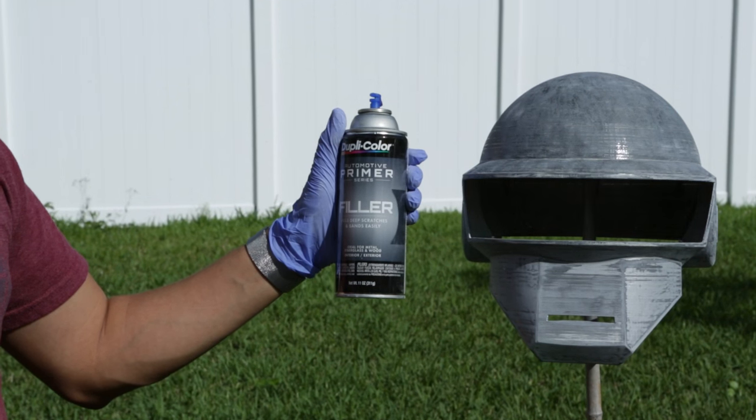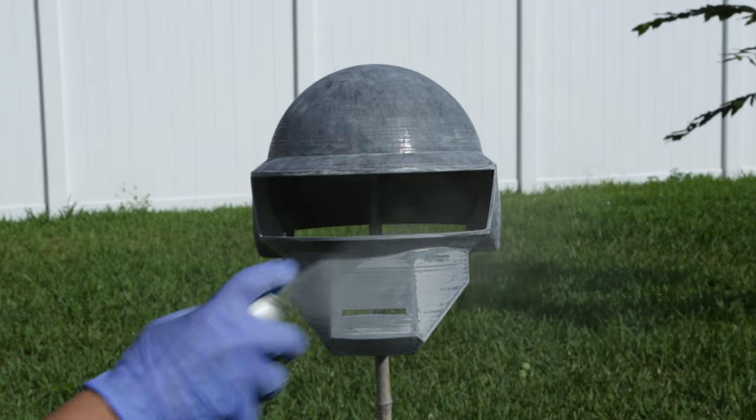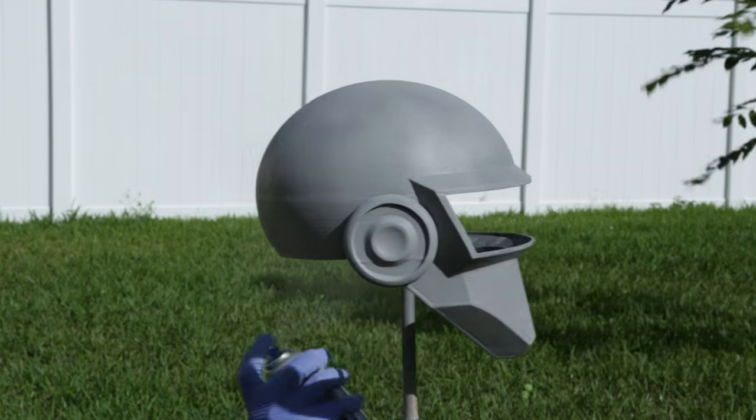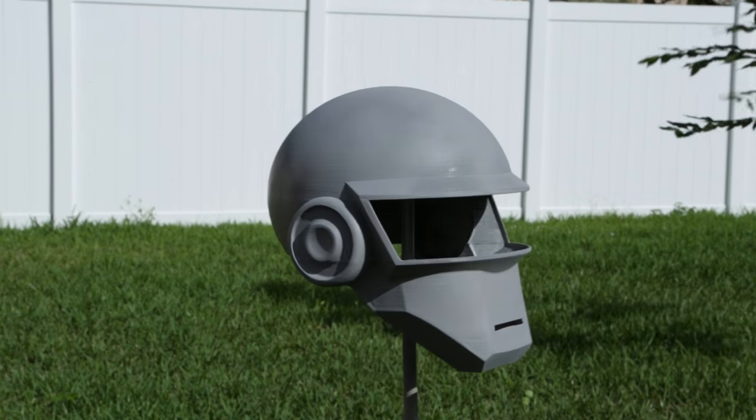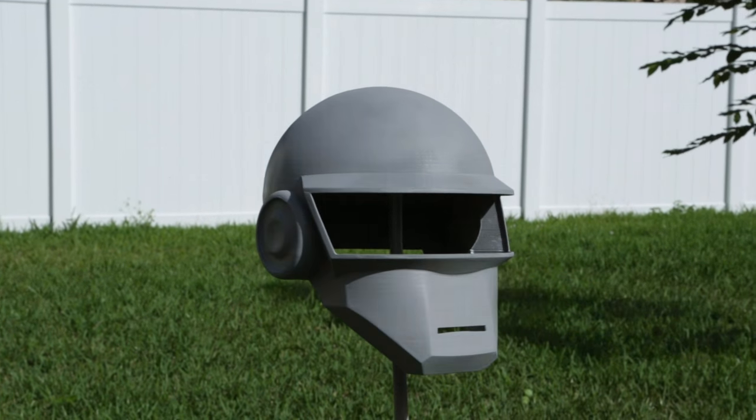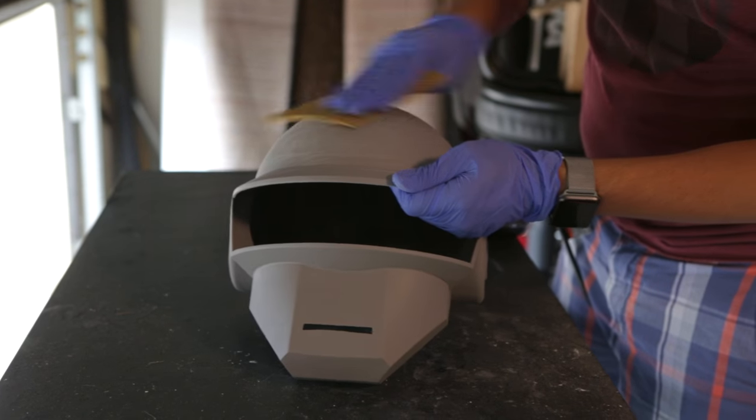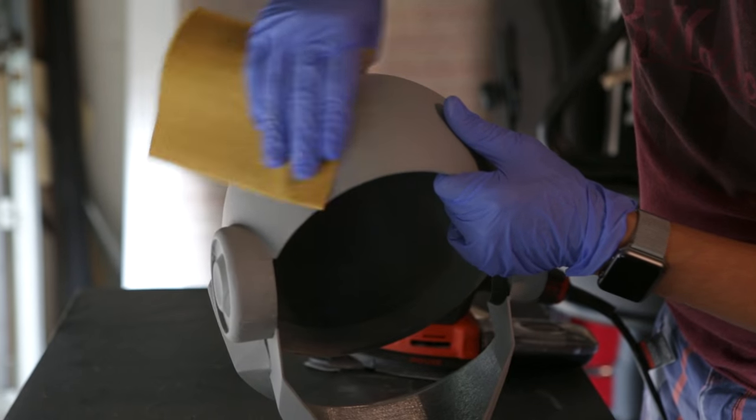We'll use filler primer spray paint to fill in any of the remaining gaps and then apply an even coat, sanding down and applying a second coat of filler primer. Then we'll use 220 grit once again to sand the surface.